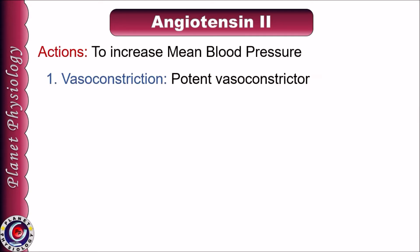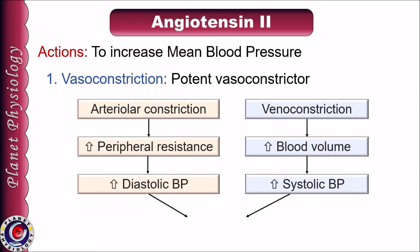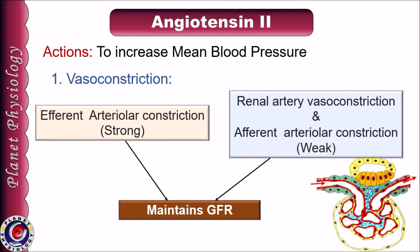The major action of angiotensin 2 is to increase mean arterial blood pressure, achieved through various mechanisms. First, it is a potent vasoconstrictor acting on arteries as well as veins. Arteriolar constriction increases total peripheral resistance and thereby diastolic blood pressure, whereas venoconstriction increases blood volume and thereby cardiac output and systolic blood pressure, thus increasing mean blood pressure. Angiotensin 2 also causes strong efferent arteriolar vasoconstriction and increases GFR by increasing glomerular capillary hydrostatic pressure. It also causes renal artery and afferent arteriolar vasoconstriction, though these actions are weaker. Thus angiotensin 2 helps maintain GFR and is an important part of the tubuloglomerular feedback mechanism.